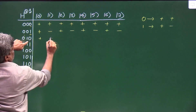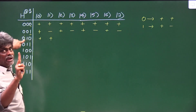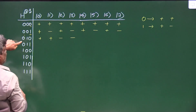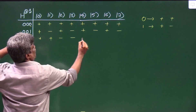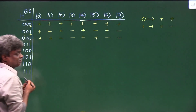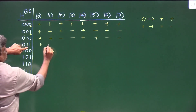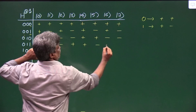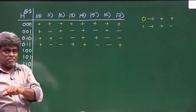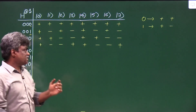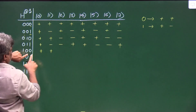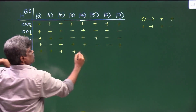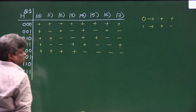Continuing H⊗3: for |011⟩, first bit 0 → '+,+'; second bit 1 → '+,+,−,−'; third bit 1 → take opposite of the last portion: '+,+,−,−,−,−,+,+'. For |100⟩: first bit 1 → '+,−'; second bit 0 → repeat: '+,−,+,−'; third bit 0 → repeat: '+,−,+,−,+,−,+,−'. For |101⟩: first bit 1 → '+,−'; second bit 0 → '+,−,+,−'; third bit 1 → take opposite of last portion: '+,−,+,−,−,+,−,+'.